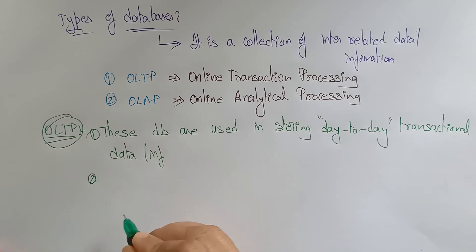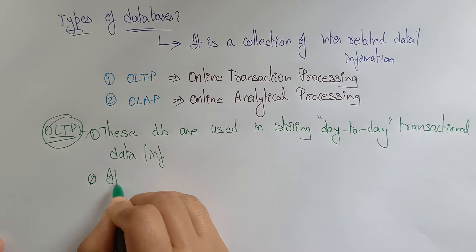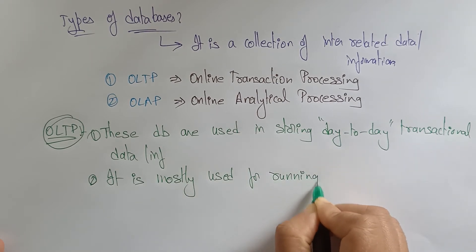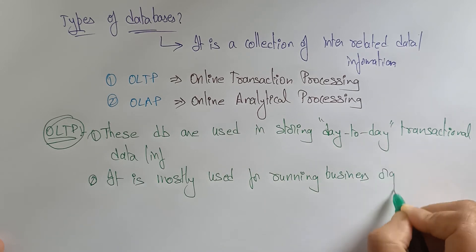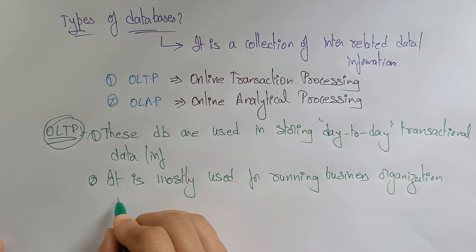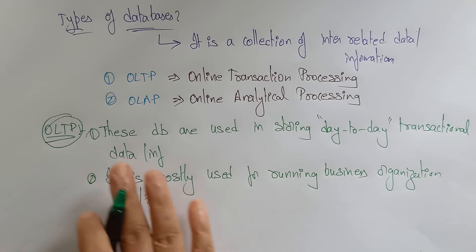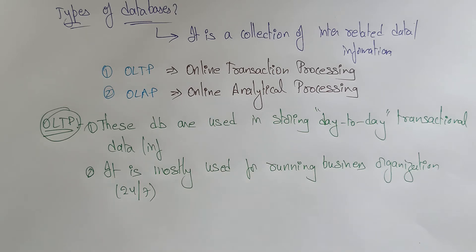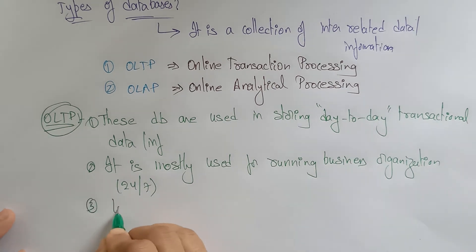OLTP is mostly used for running business organizations where daily updates are required — meaning the business has to work 24 by 7. A good example is the banking sector: it is an online transaction processing system where day-to-day transactional information must be collected. Whenever you withdraw or deposit, it has to be updated — that is a live operation.